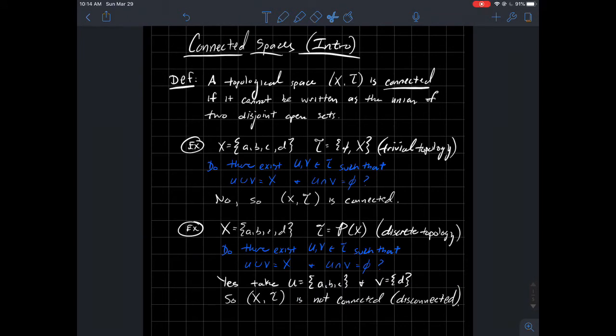So one example, let U be {a,b,c} and let V just be {d}. Then when I union those together, I get the whole set X back, but they don't overlap. So in this case, this set X,T now is not connected. It's disconnected is what you might say. So I hope that you see between these two examples that the set is one thing, but really what determines if something's connected or not is the topology that you put on the set.